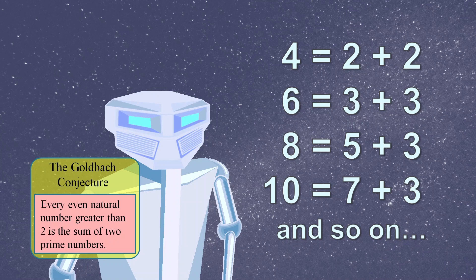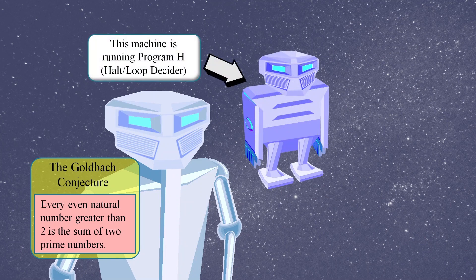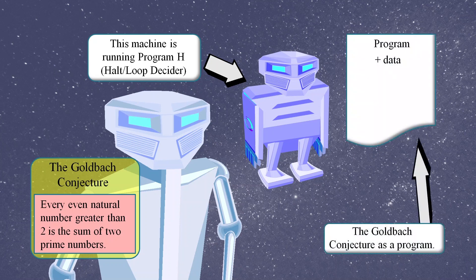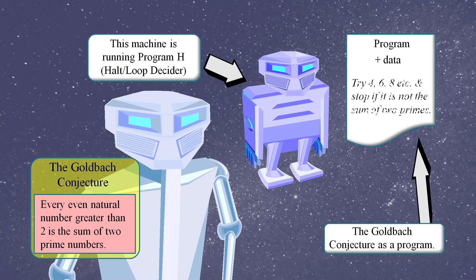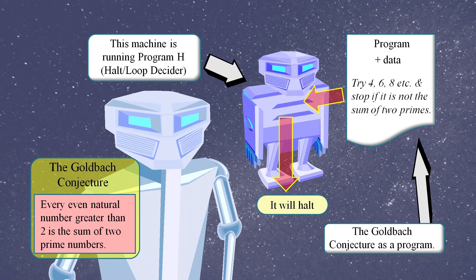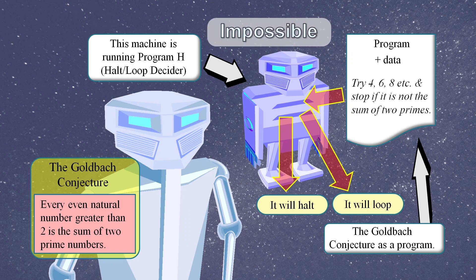Now suppose we could have a machine that could figure out if a program with its input data is going to finish nicely or go into a loop. Then we could design a computer program based on the Goldbach conjecture. The program could test each even number greater than two to see if it was a sum of two primes and simply stop when it finds an even number that is not the sum of two primes. We simply pop this program into our halt loop decider and it will determine if it will halt, in which case the Goldbach conjecture is false, or if it loops, in which case the Goldbach conjecture is true.